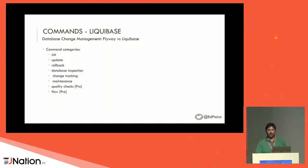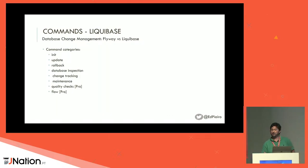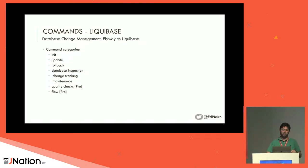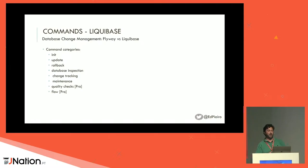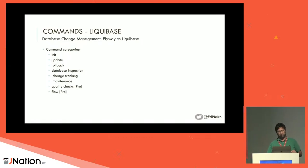Liquibase, on the other hand, has more functionalities and therefore more commands. The categories are: init for initialization, update, rollback, database inspection, change tracking, maintenance — and for example, quality checks and flow are only in the pro edition.